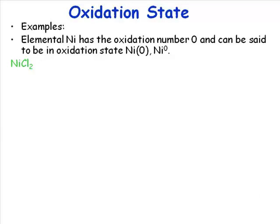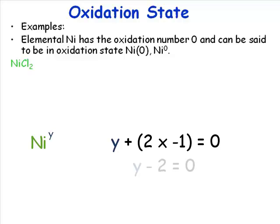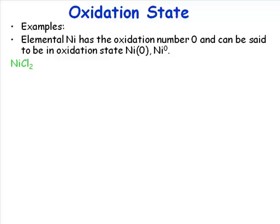So let's take a simple example: nickel dichloride, NiCl2. What we're interested in here is the oxidation state of nickel, and I normally give that the superscript y. The unknown in our equation is going to be y. This is a neutral molecule, so what you've got is y plus 2 times -1, which is the oxidation number of a chloride ligand, equals zero. So y - 2 = 0. If we add 2 to both sides of this equation, we're going to get y = +2. So that is how we do this systematically.